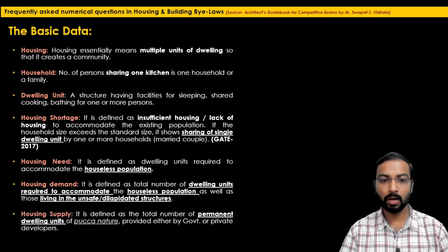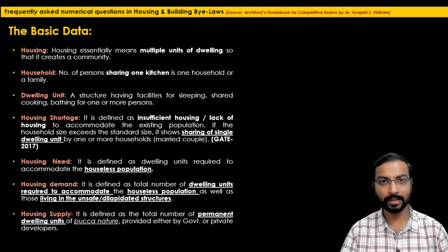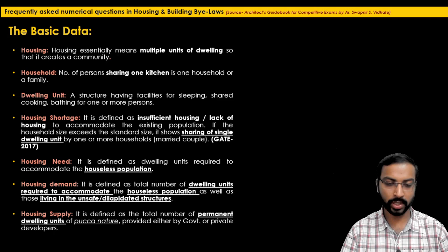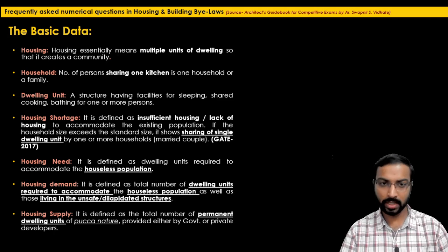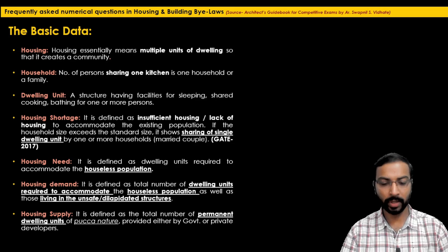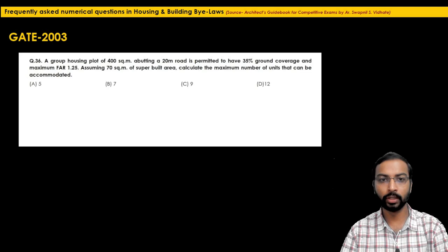The last definition is housing supply, defined as the total number of permanent dwelling units of pucca nature — either provided by government or a private developer. Please note the keyword permanent and pucca nature. Based on all these definitions we are going to solve our numerical problems.